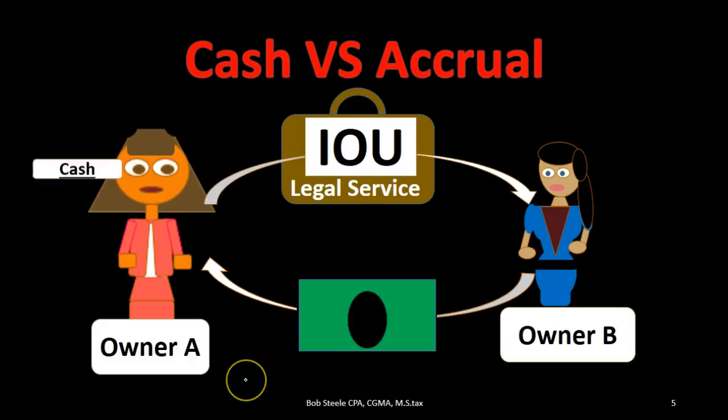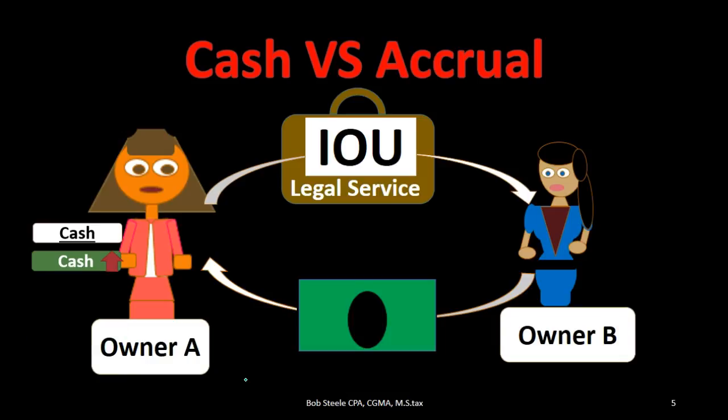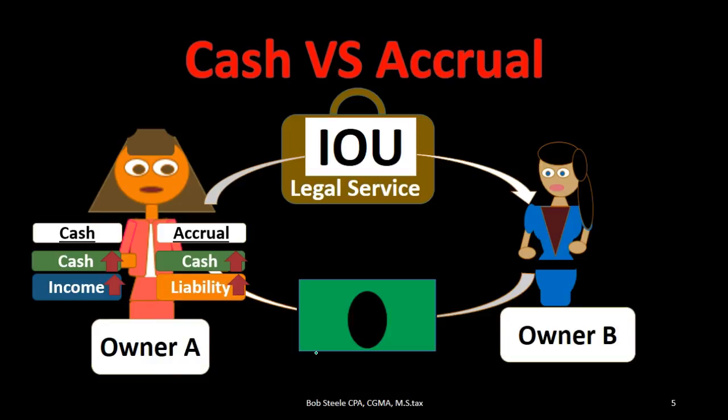What would owner A do under a cash method? Cash is going up — that is what it is; cash does not change between the two methods. But income is also going up. Why? Because the cash is close enough to the fire. We didn't do the work yet, but it's close enough to record it now. Under the accrual method, cash is going up, but we're not going to record income — we want to be more specific. We haven't earned the income yet; we're going to earn it in the future. What we have right now is a liability, meaning we actually owe the work in the future, or we owe the money back. So you can see that the accrual method is actually a bit more accurate.